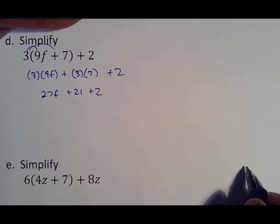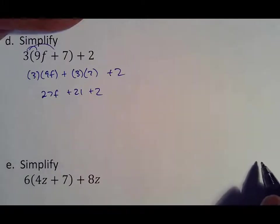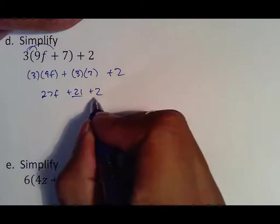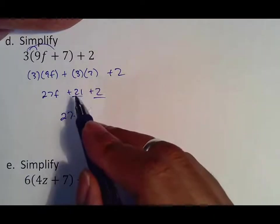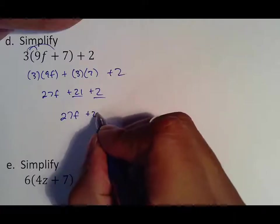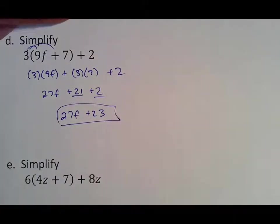And so what we're doing now is we're looking and saying, is there anything that can be put together before we wrap it up? And I think it is. Both of these whole numbers can be. So 27f comes down, and then 21 plus 2 makes 23. And that would be the answer you're looking for.